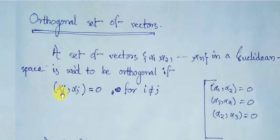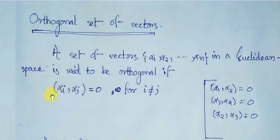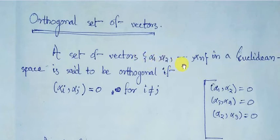For same components — that is, alpha i comma alpha i, such as alpha 1 comma alpha 1 or alpha 2 comma alpha 2 — nothing is defined for such cases. If this condition is defined for a collection of vectors from a Euclidean space, then that collection will be termed an orthogonal set of vectors.